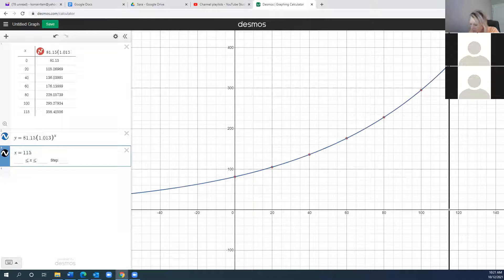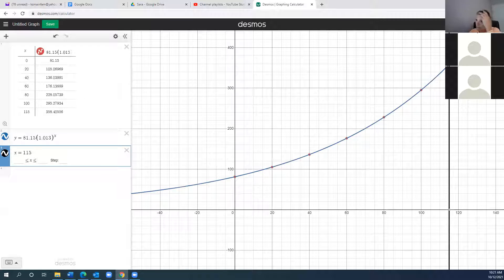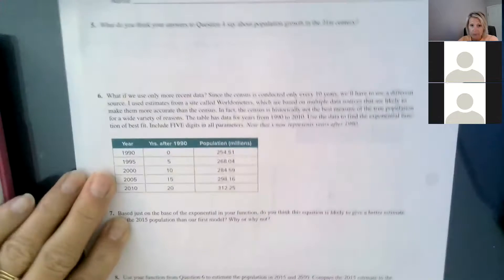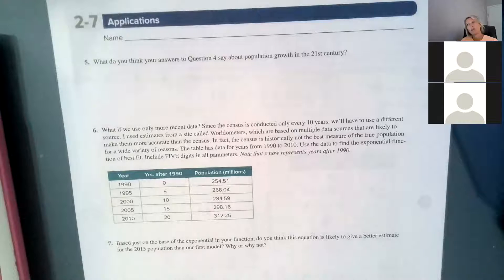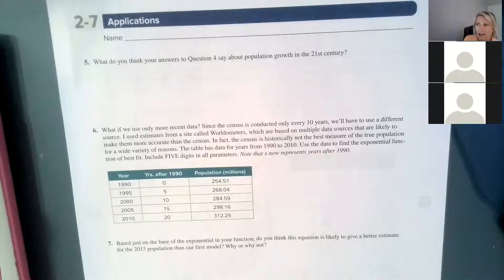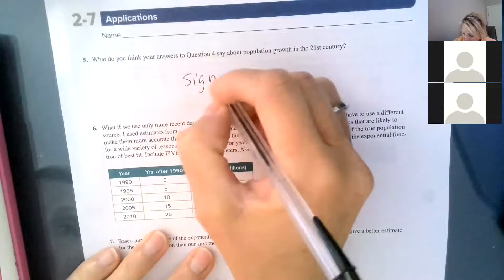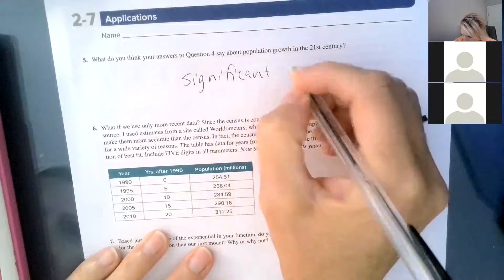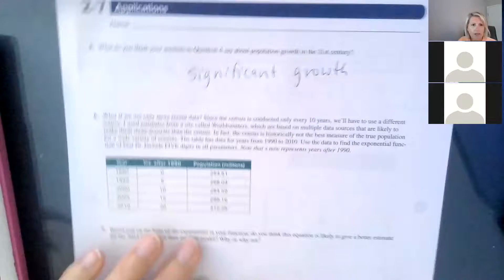So let's flip the page. Number five says, what do you think your answer to question four says about population growth in the 21st century? I'd say, what do you all say? Looking at the graph, looking at the values, 1900 we had 81 million, they said here. And now we have, just over 100 years, that we have 358 million is what they're predicting. So I would say significant growth.